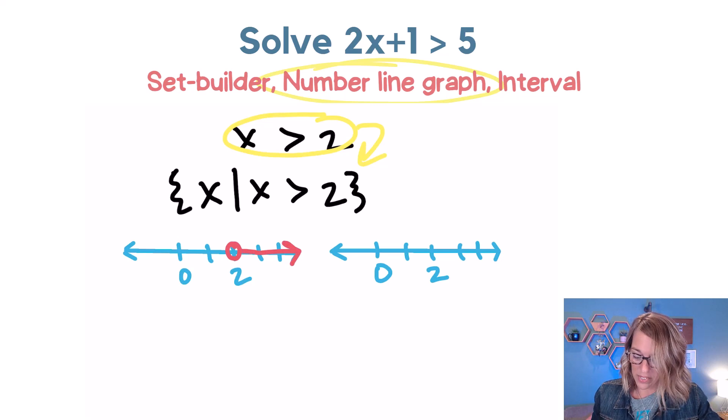Now in the other form, since we're not including 2, we're going to use a parenthesis. If we were including 2, we would use a square bracket there. But we're not including 2, so we're going to open it with a parenthesis and then an arrow for everything greater.